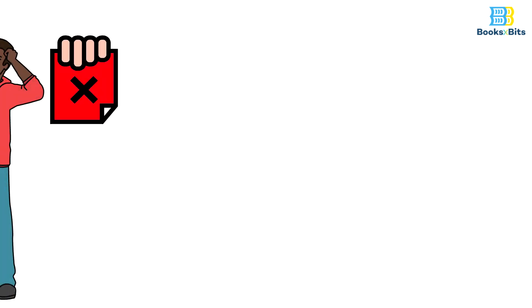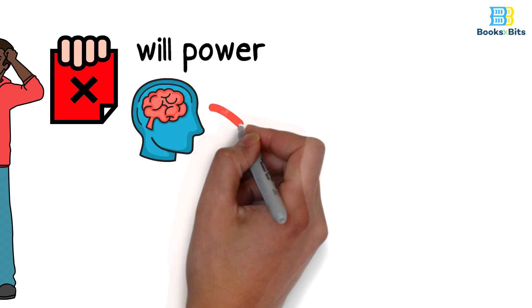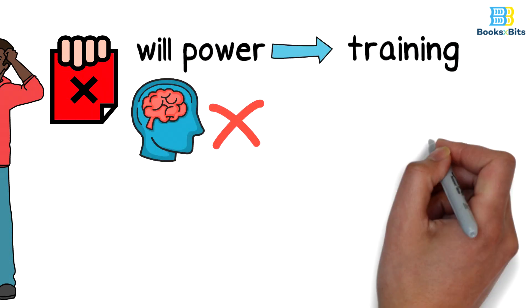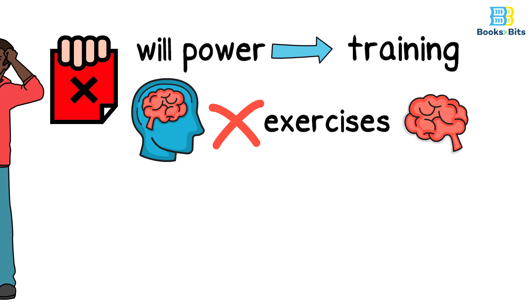The common mistake made by such people is that their understanding of the willpower is wrong. Will is a skill that can be acquired through training and mental exercises, and it is not a characteristic found only in some people.